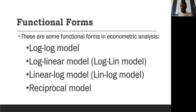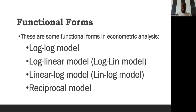There are some functional forms in econometric analysis that we will be encountering. These four have been represented in the slide: the log-log model, the log-linear model (sometimes called the log-lin model), the linear-log model (also called the lin-log model), and the reciprocal model. In econometrics, any time you mention taking the log of a variable, we mean the natural logarithm — a logarithm with base E, not base 10.